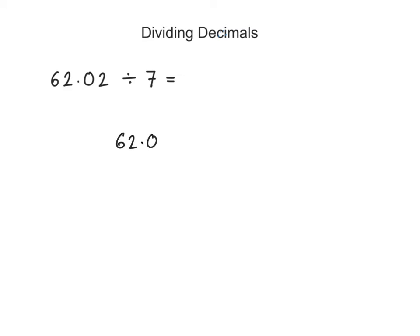62.02, the dividend — the thing that I am dividing — goes inside of the bus stop. And the quantity that I am dividing by, the divisor, goes outside of the bus stop.